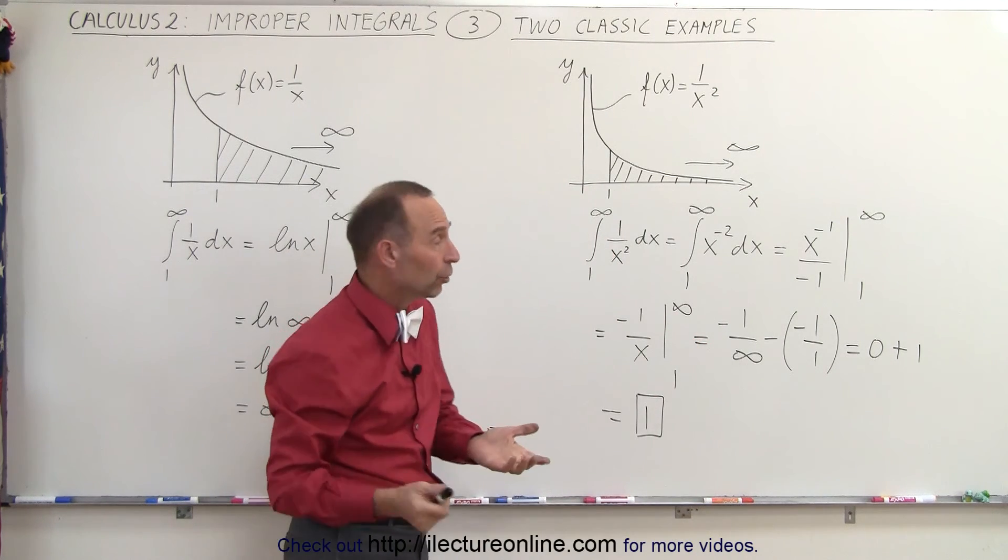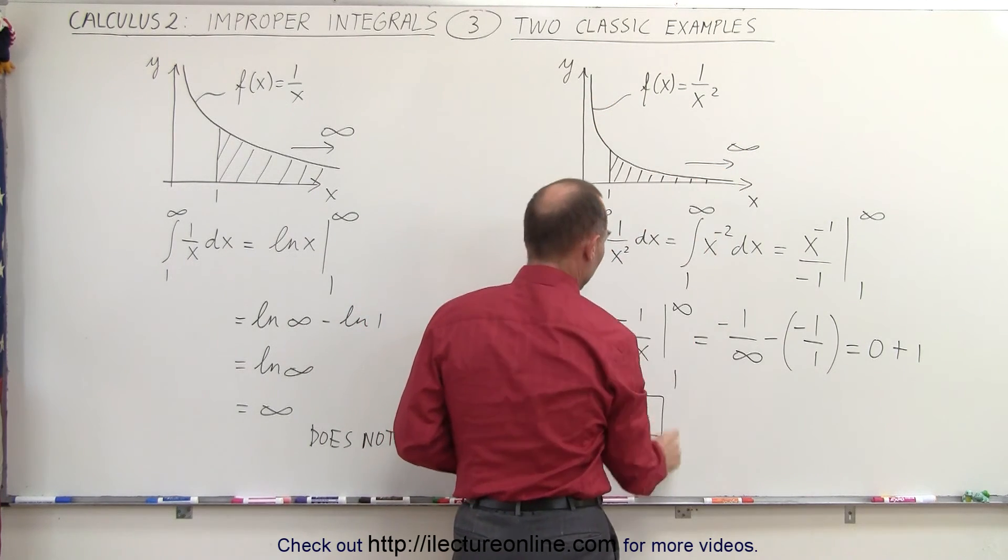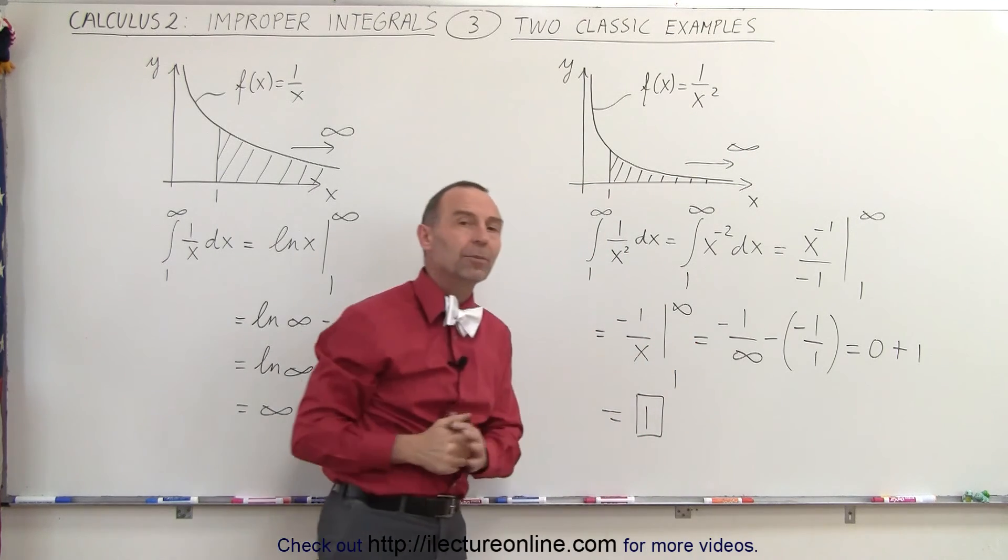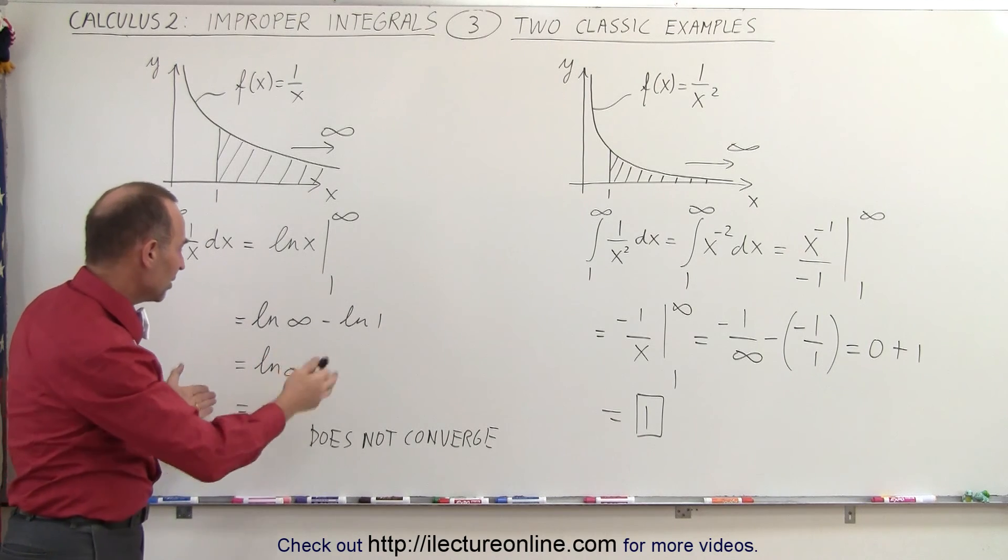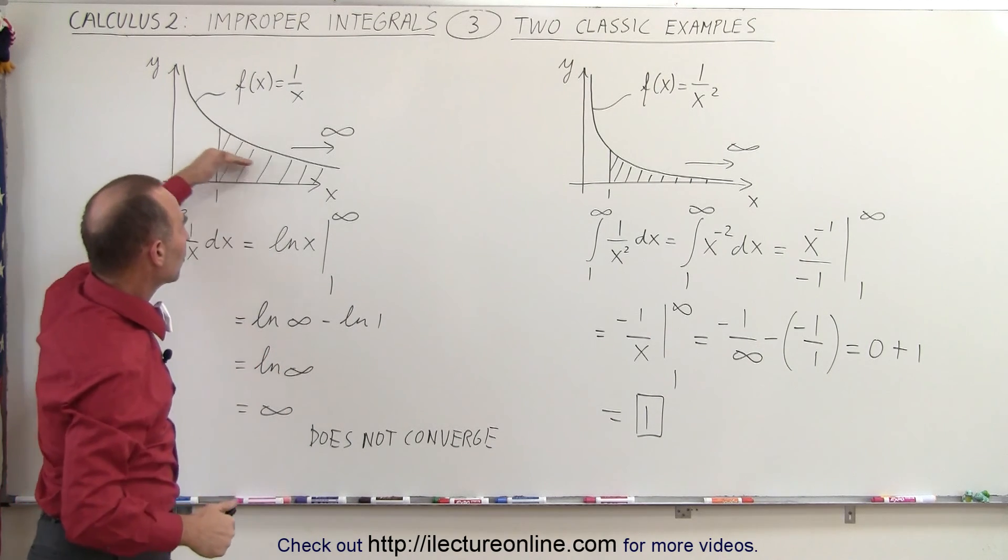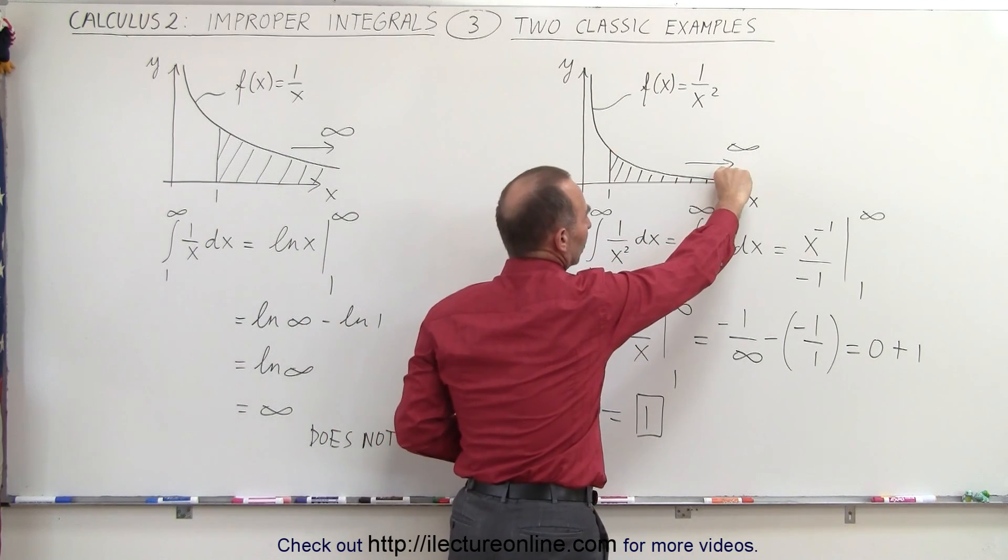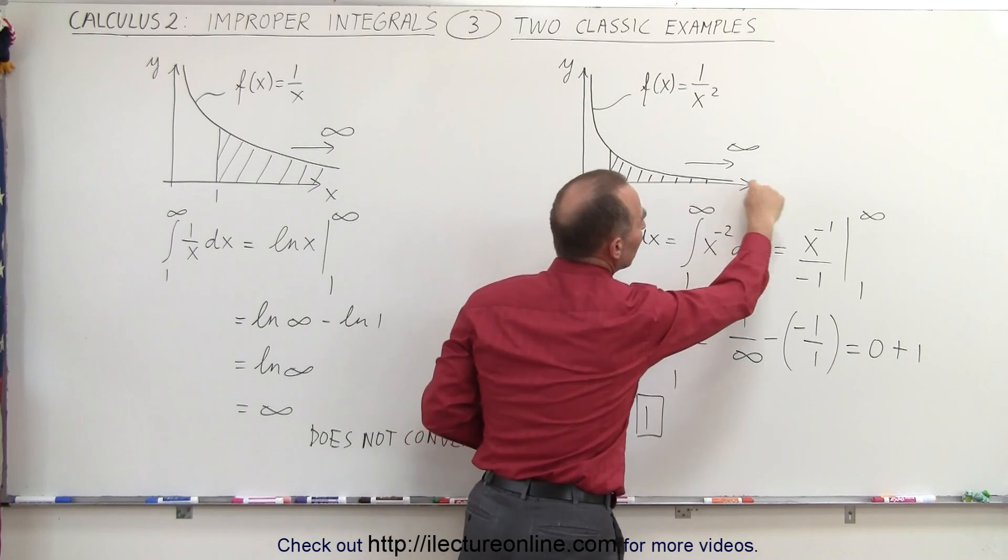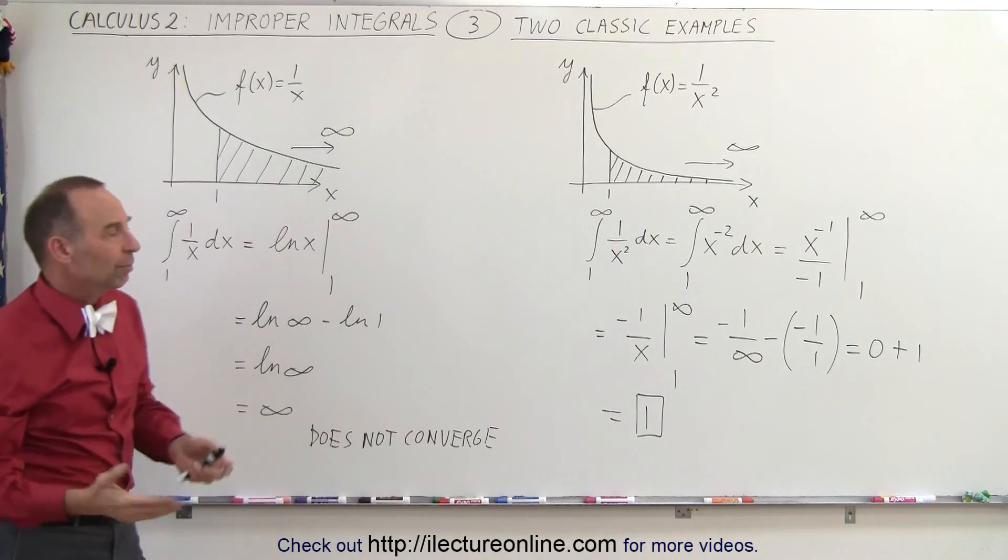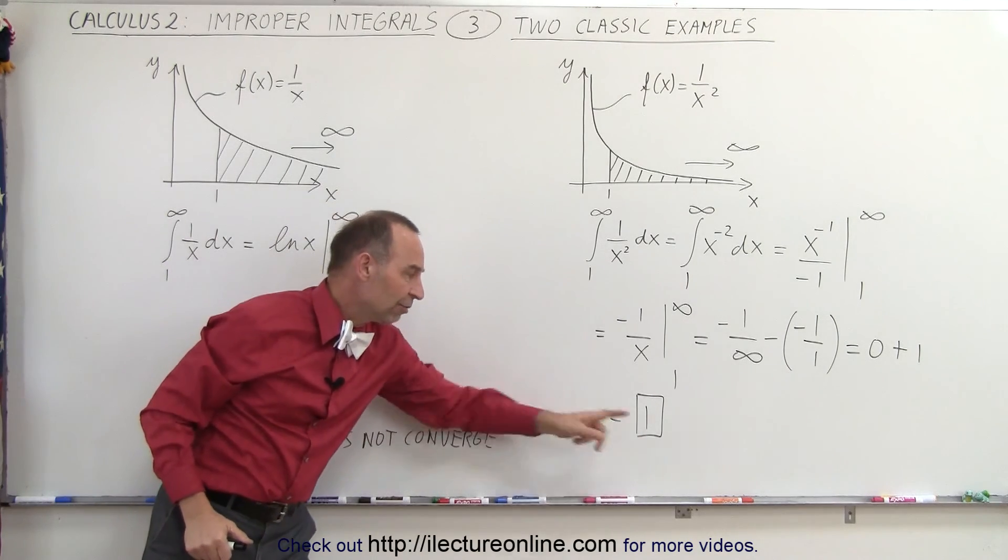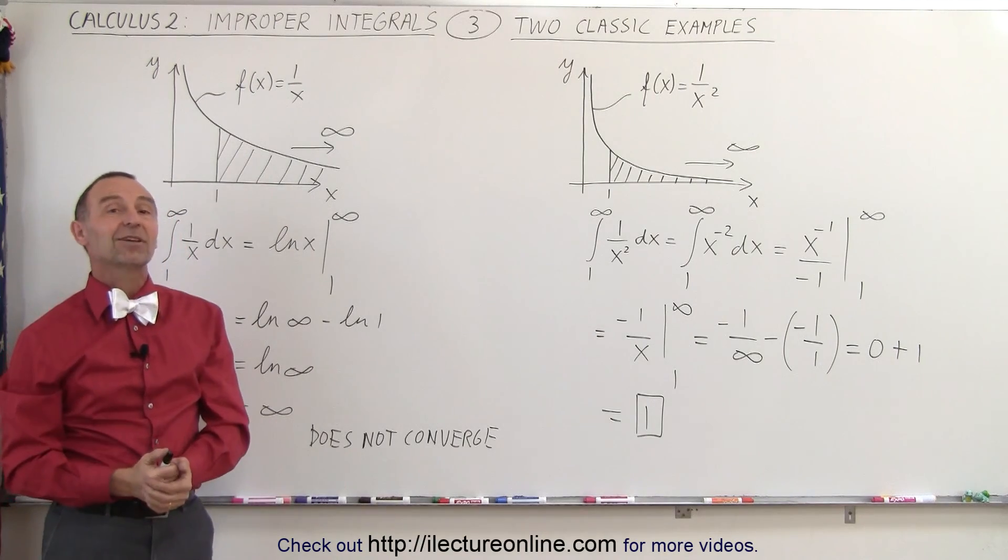So we can say that it does converge. The area underneath the curve from 1 to infinity underneath the curve 1 over x squared is equal to 1. And you can see it's a singular number. The function converges or the integral converges and we can see the difference now. This one continues on forever and the area continues to increase. Here the decrease, the asymptotic approach to the x-axis is quickly enough so that any additional area underneath the curve is so minuscule that it simply is not effective in making the number change and it eventually converges to the number 1. And that's the difference between these two classic examples.